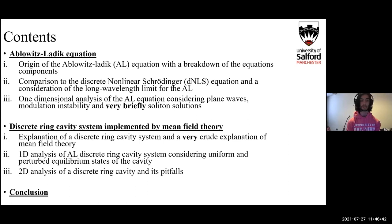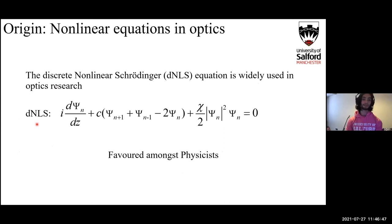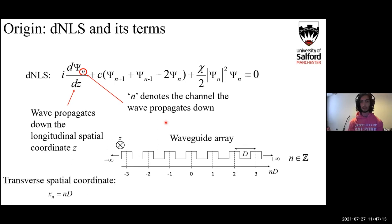Nonlinear equations are quite commonly used in optics and have been for quite a long time. As mentioned before, the discrete nonlinear Schrödinger equation is used a fair bit and it's favored amongst physicists because it's such a physical equation—each term can be attributed to something that's real. Just quickly breaking down the discrete nonlinear Schrödinger equation, because all of this will map directly onto the Ablowitz-Ladik. First we're going to talk about this little subscript n, and this denotes the channel the wave is traveling in a waveguide array, which here will be described as an infinitely wide series of parallel channels. These channels have a spacing of d.